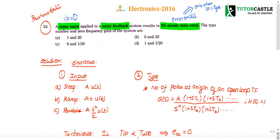Question number 52: a ramp input is applied to a unit feedback system and results in 5% steady state error. The type number and zero frequency gain of the system are to be found. This question is based on steady state errors in control systems — a very important topic for GATE, IES, ISRO, and any exam, similar to skin depth, conductivity of semiconductors, or resistivity.